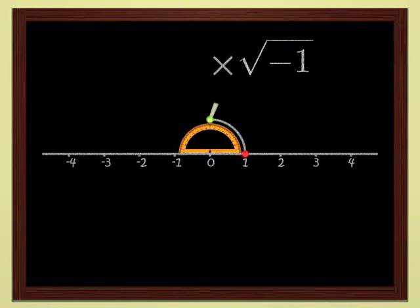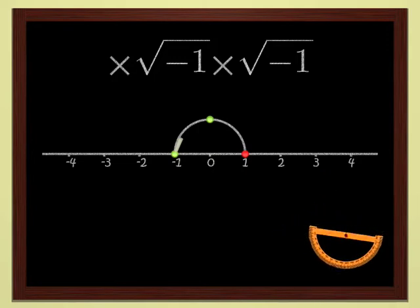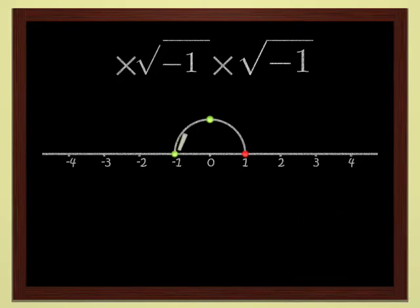If I do two quarter turns one after another, I end up doing a half turn. The square of a quarter turn is a half turn, hence minus one. It's easy when you know how. Argon decided, therefore, that the square root of minus one is represented by the point which is the image of one by a 90 degree rotation.